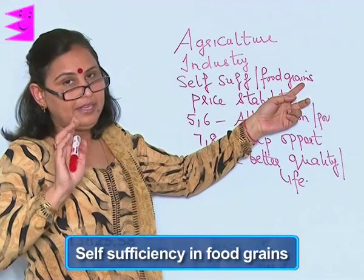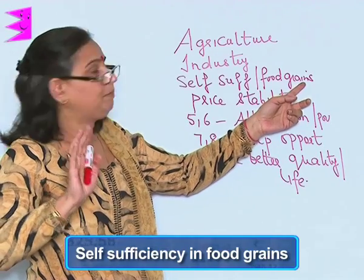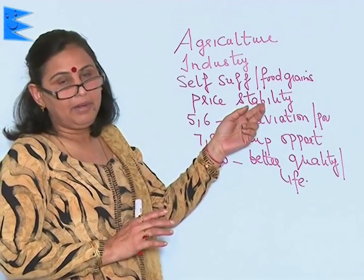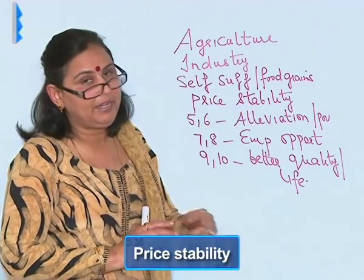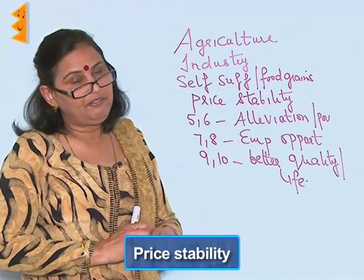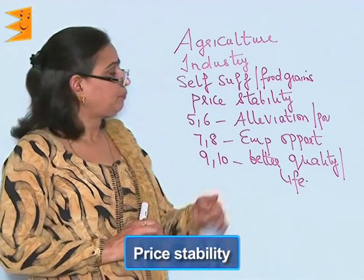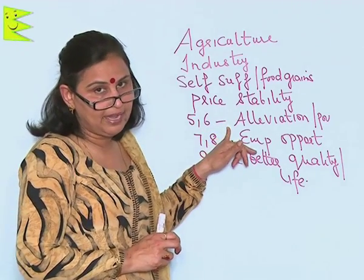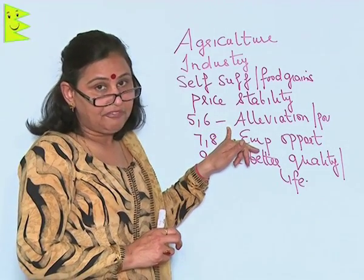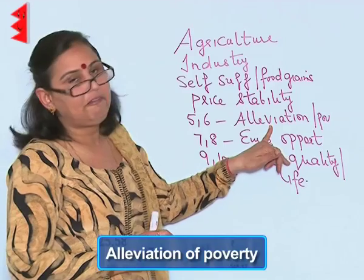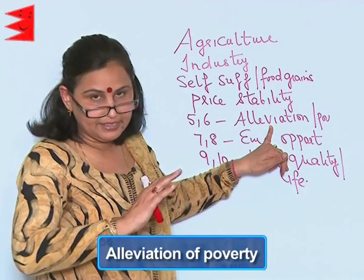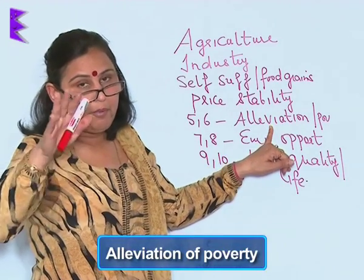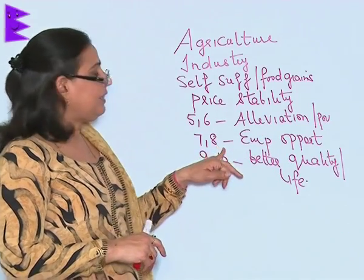The fourth five-year plan believed that price stability is a very important goal. The fifth and the sixth five-year plan felt that elevation of poverty — that is, eradicating poverty — is a very important goal.